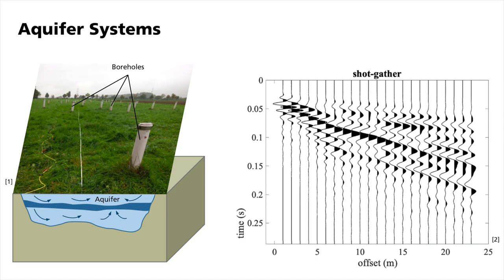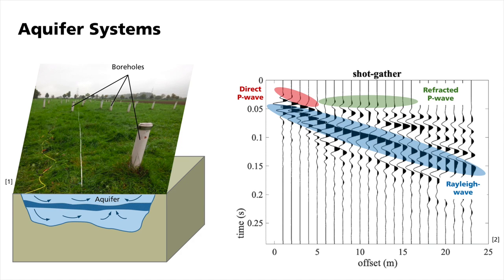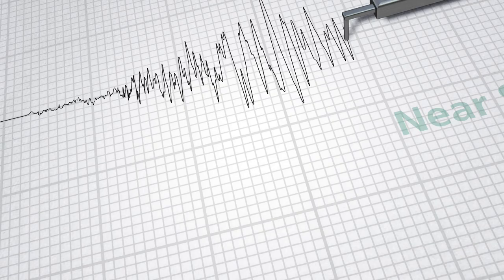Here you see an example of a seismic shot gather recorded at the test site. Clearly, the direct and refracted P-waves are visible. At later times, the Rayleigh waves dominate. Those data were analyzed by full waveform inversion to investigate the properties of the subsurface and to reveal the complex structure of the aquifer system.